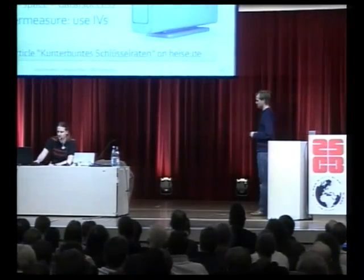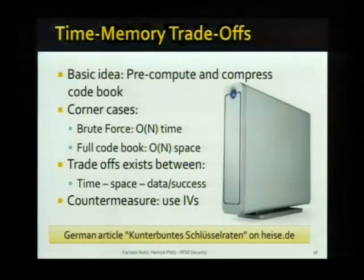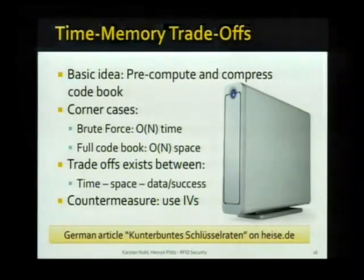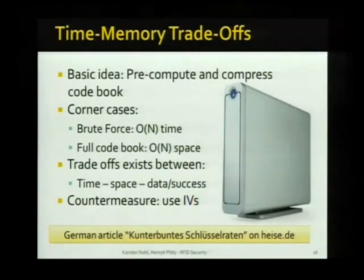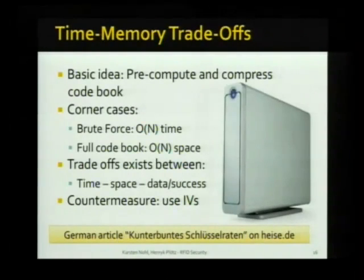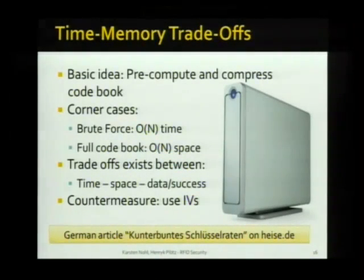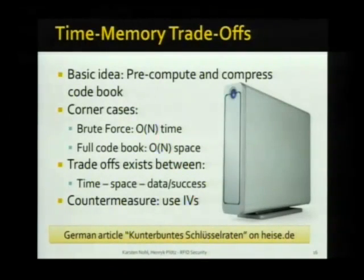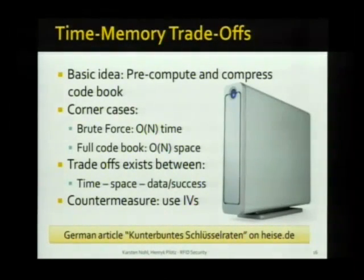Moving on — another class of attacks involves time-memory trade-offs, and the idea is to compute a codebook. Think of a one-way function as a secret language: every bit string has an equivalent in the other language, and encryption is translating into that secret language. One way to break it would be a dictionary mapping the secret language back — that would be decryption. Building such a dictionary is usually impossible because if there are 48 bits in the key there are 2^48 possible entries.